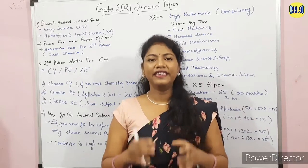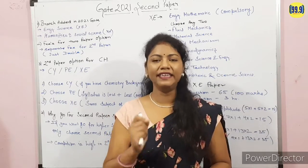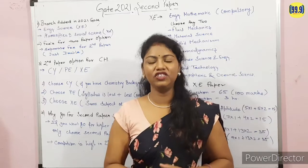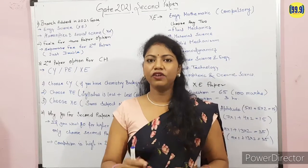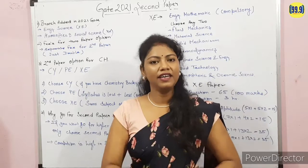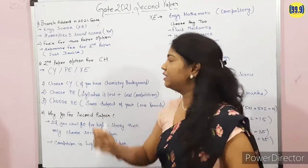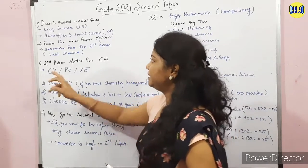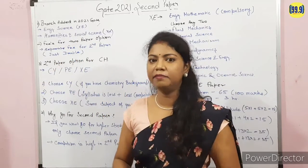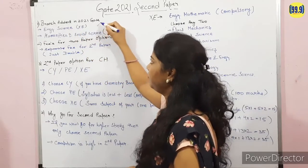As we know, the GATE 2021 exam form is out in the month of September. In this time, we have an advantage to apply for the GATE exam by two different subjects. I am going to discuss about the Chemical Engineering second paper options and give you the best option for Chemical Engineering with reasons. The two basic subjects added in GATE 2021 are Engineering Science, represented by XE, and Humanity and Social Science, represented by XH.